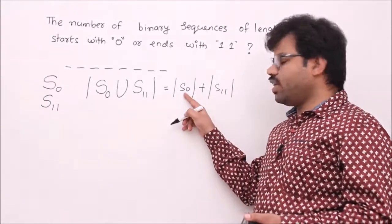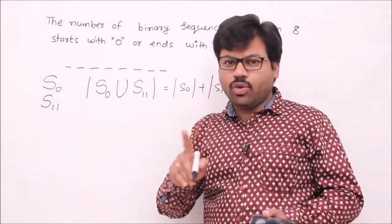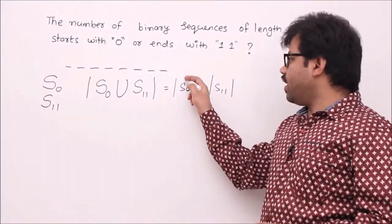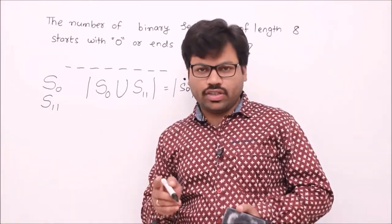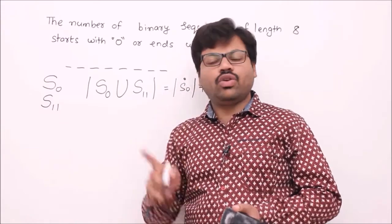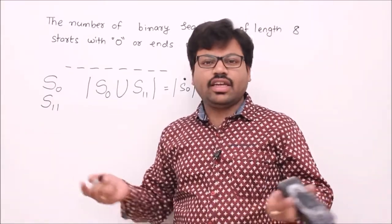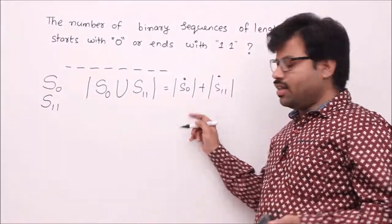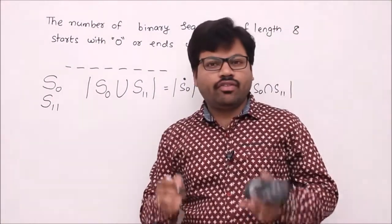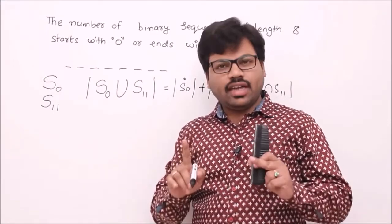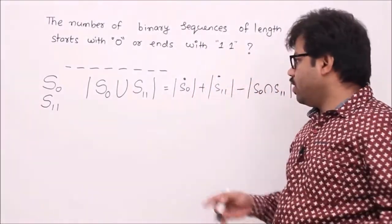We cannot simply apply the sum rule because there are sequences that start with 0 and also end with 11 — those would be double-counted. So the intersection is not empty. That's why we use the Principle of Inclusion-Exclusion. In one line: if the sets have common elements, use inclusion-exclusion; if their intersection is empty, the sum rule suffices.